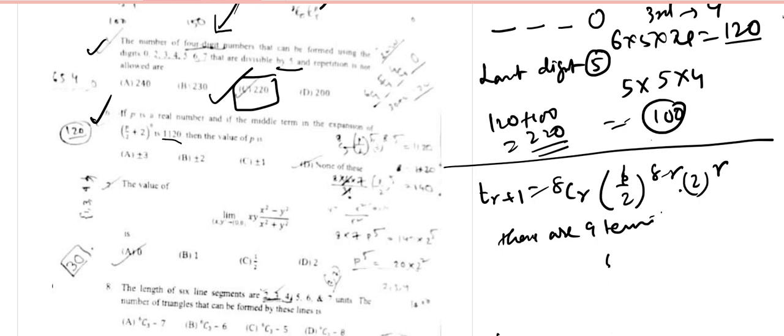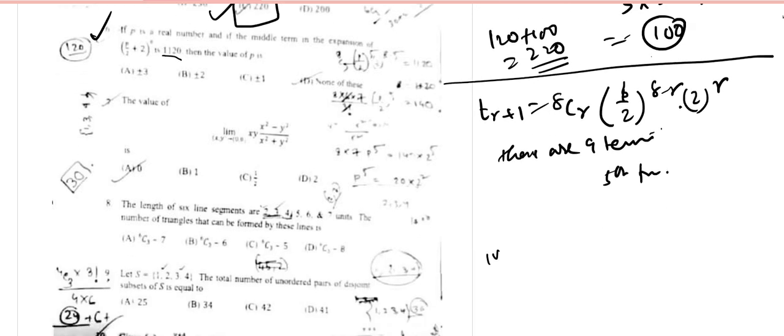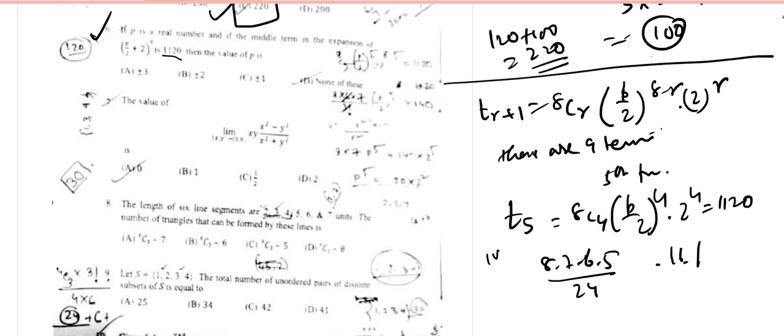So T5 = 8C4 × (p/2)^4 × 2^4 = 1120. Since r+1 = 5, r = 4. Let's put this value: 8C4 = 70, which gives us 70 × 16 × p^4/16 = 1120.